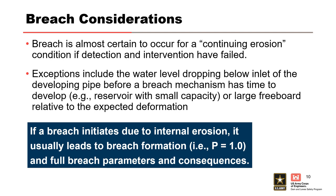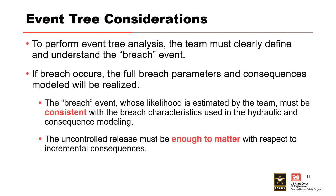If a breach initiates due to internal erosion, it usually leads to breach formation. Breach is almost certain to occur if a continuing erosion condition is expected for the filters or transitions, or there are no filters and detection and intervention have failed. Exceptions include the water level dropping below the inlet of the developing pipe before a breach mechanism has time to develop, and large freeboard relative to the expected deformation. For event tree analysis, the breach event must be clearly defined. The breach characteristics used in hydraulic and consequence modeling must be consistent with the breach event for which likelihood of occurrence was estimated, and the uncontrolled release must be enough to matter with respect to incremental consequences.